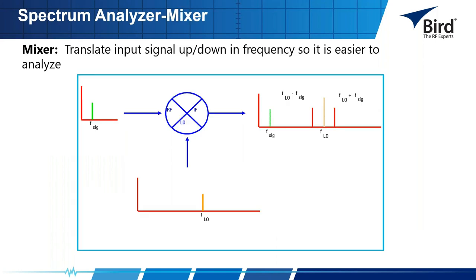A mixer translates input signals up and down in frequency to make them easier to analyze. It is a three-port device that converts a signal from one frequency to another, sometimes called a frequency translation device. The input signal is applied to one input port and the local oscillator signal to the other. The output frequencies produced are the original input signals plus the sum and difference frequencies. In reality there are multiples of sums and differences generating a picket fence of signals, but we pay attention to the fundamental sum and difference frequencies.